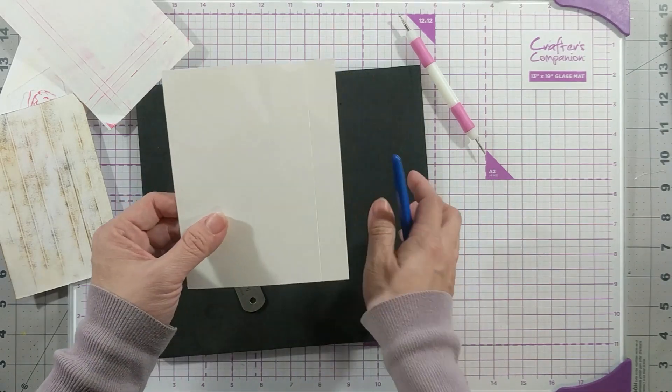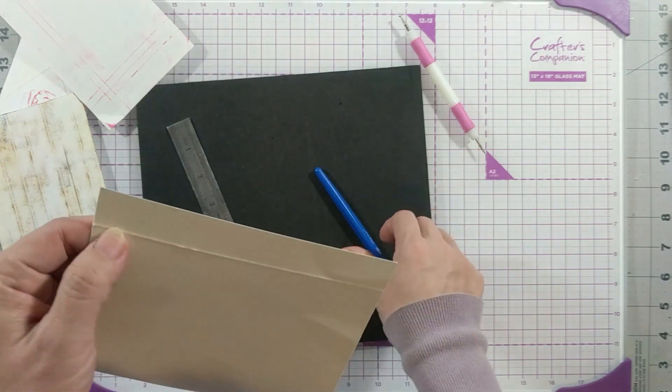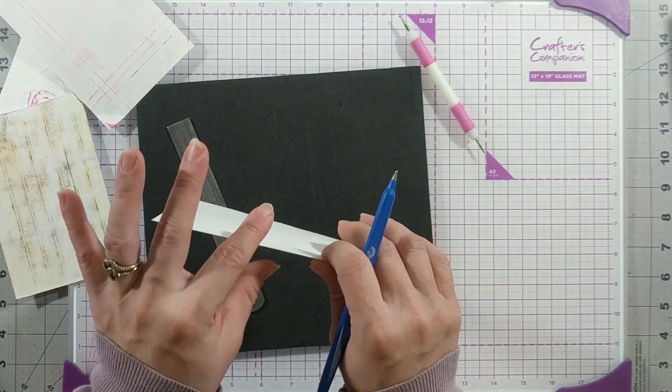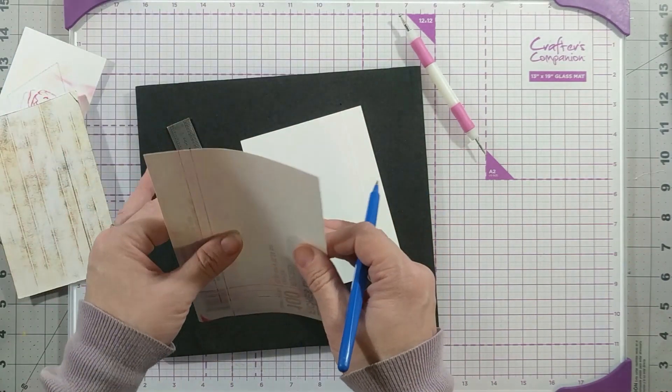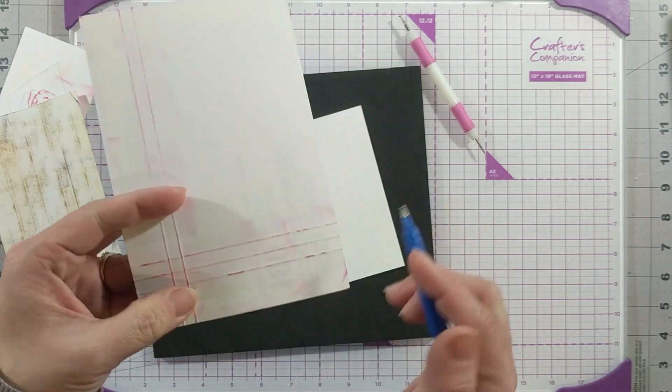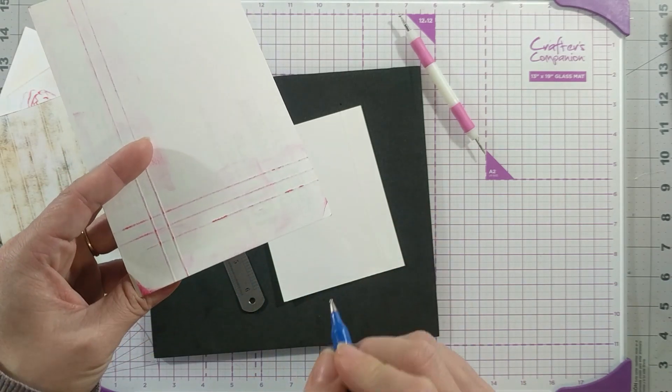One thing that I forgot to mention: this embossing with stylus is better done with cardstock paper. I tried using copy paper thickness, and it worked, but if I use a little bit of force, then my paper will tear.